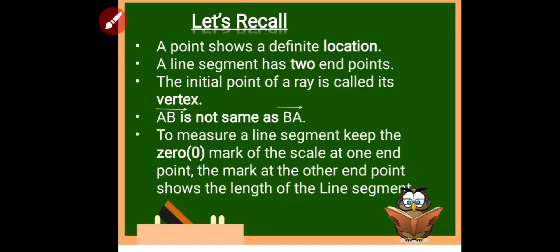Let us recall what we have learned. A point shows a definite location and is represented by a capital letter. A line segment has two endpoints. The initial point of a ray is called its vertex — the plural of vertex is vertices. Ray AB is not the same as ray BA because both have different initial points and go in different directions.